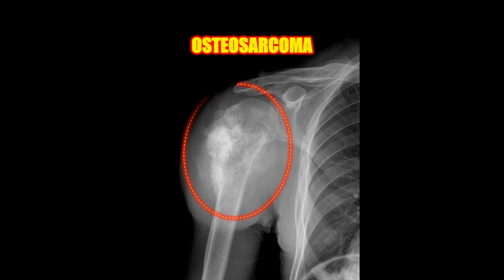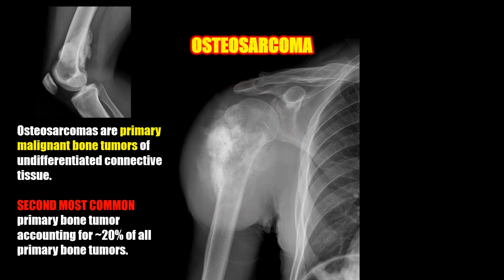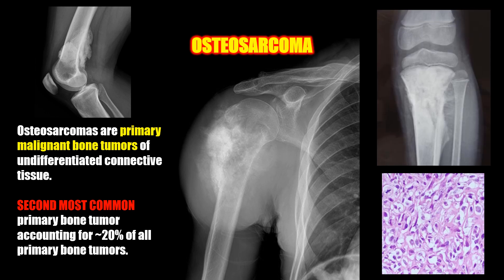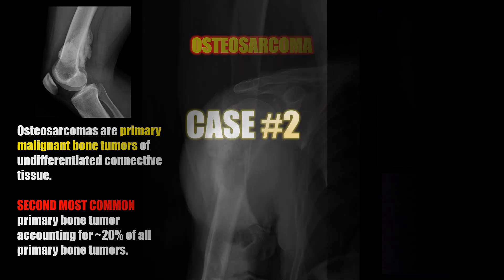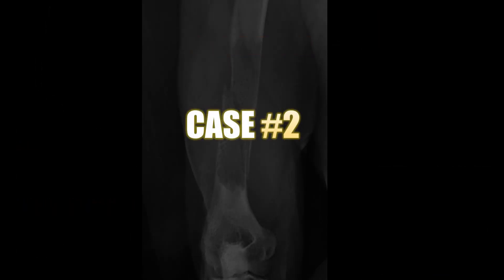Case number one is a malignant osteosarcoma of the proximal humerus. Osteosarcomas are primary malignant bone tumors of undifferentiated connective tissue. They're the second most common primary bone tumor, accounting for 20% of all primary bone tumors.